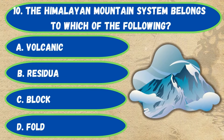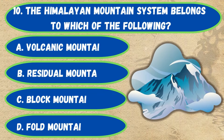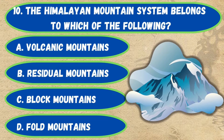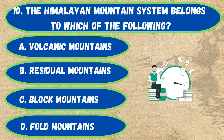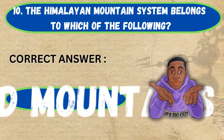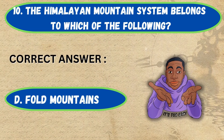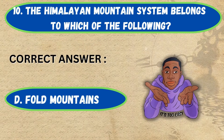Question number 10. The Himalayan mountain system belongs to each of the following: option A, volcanic mountains; B, residual mountains; C, rock mountains; D, fold mountains. The correct answer is option D, fold mountains.